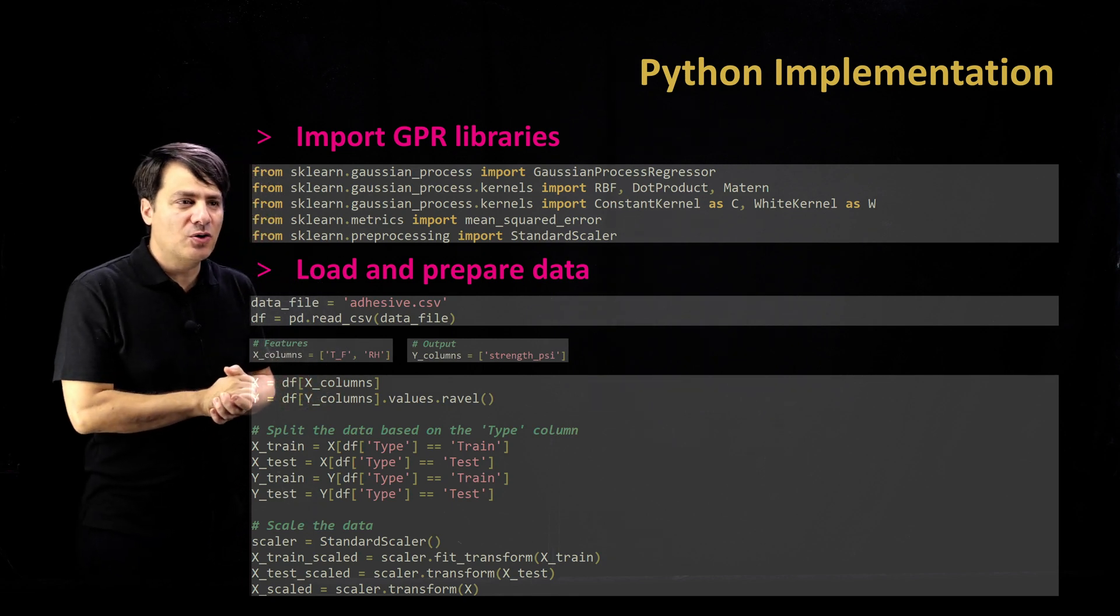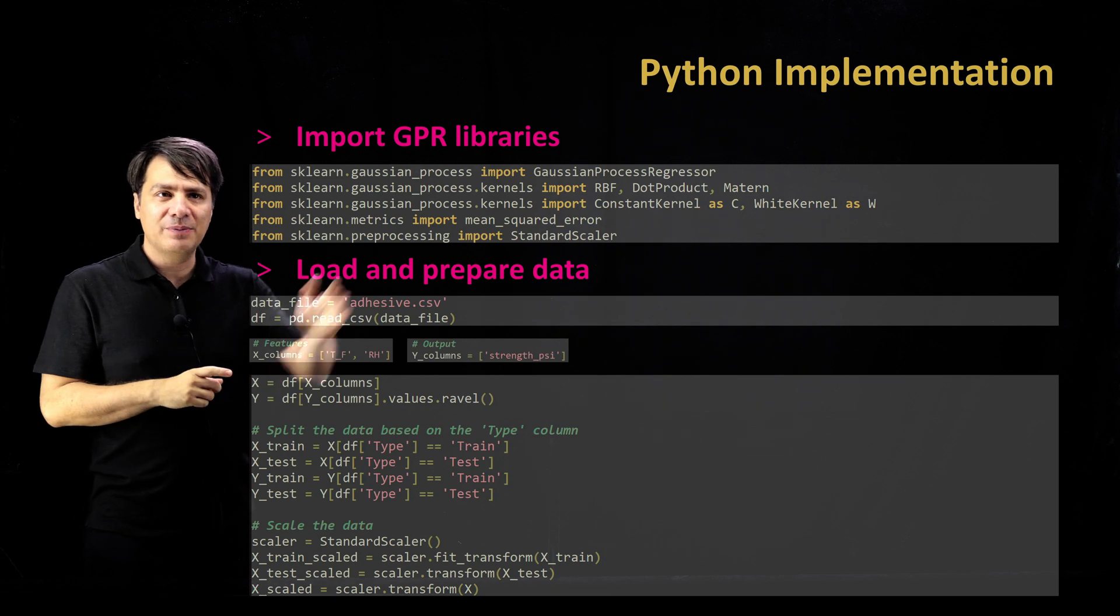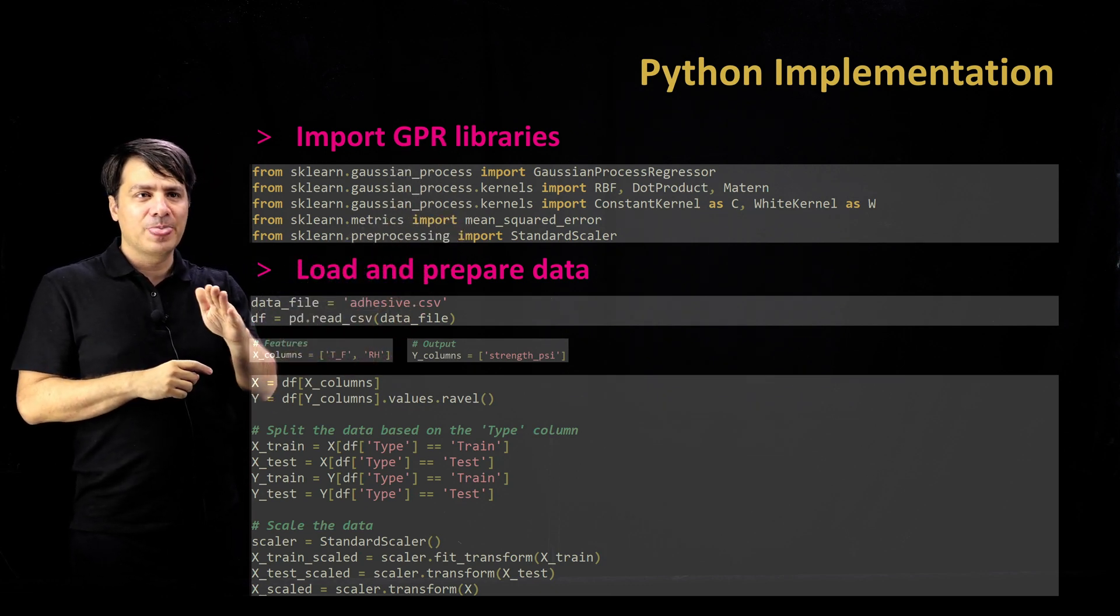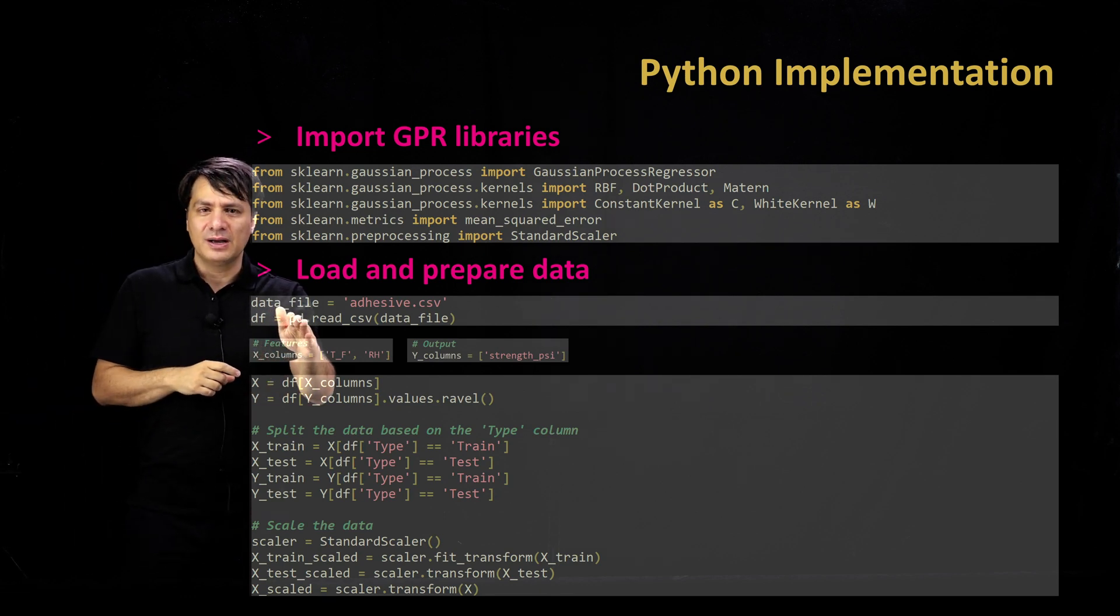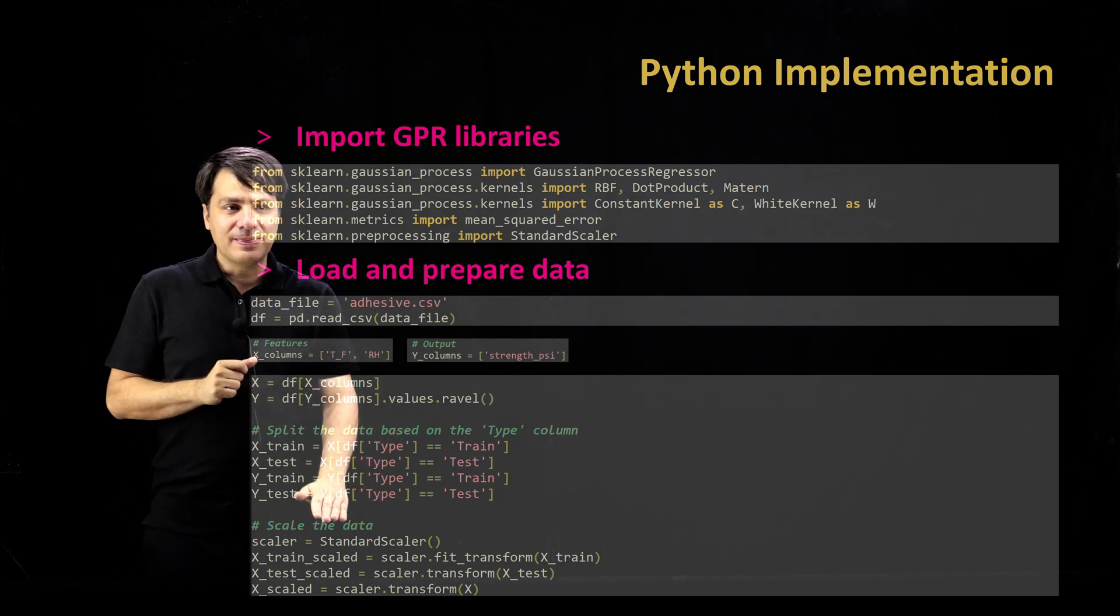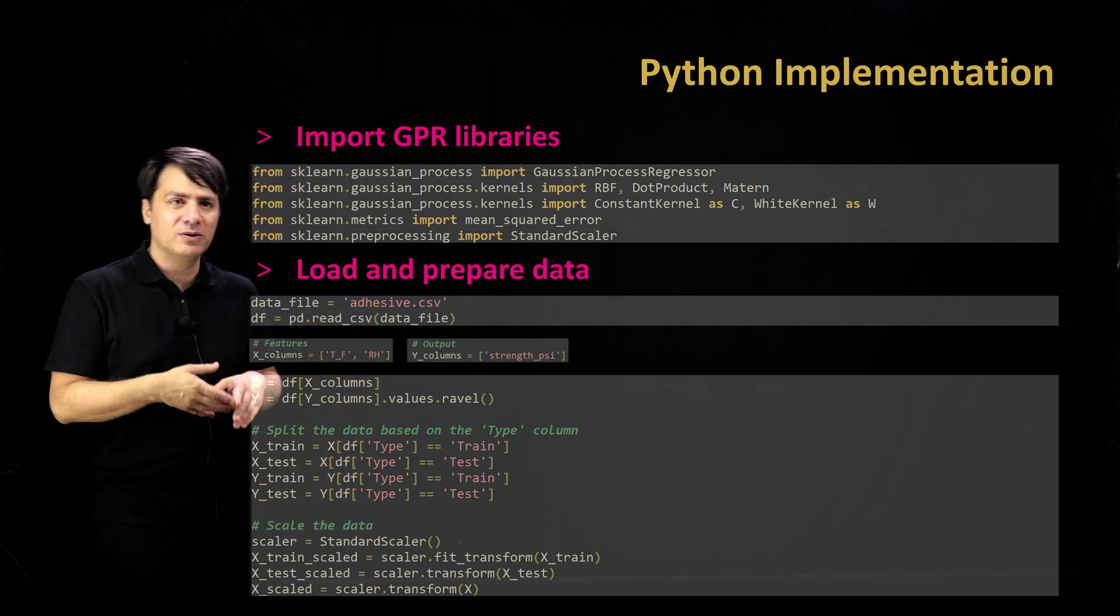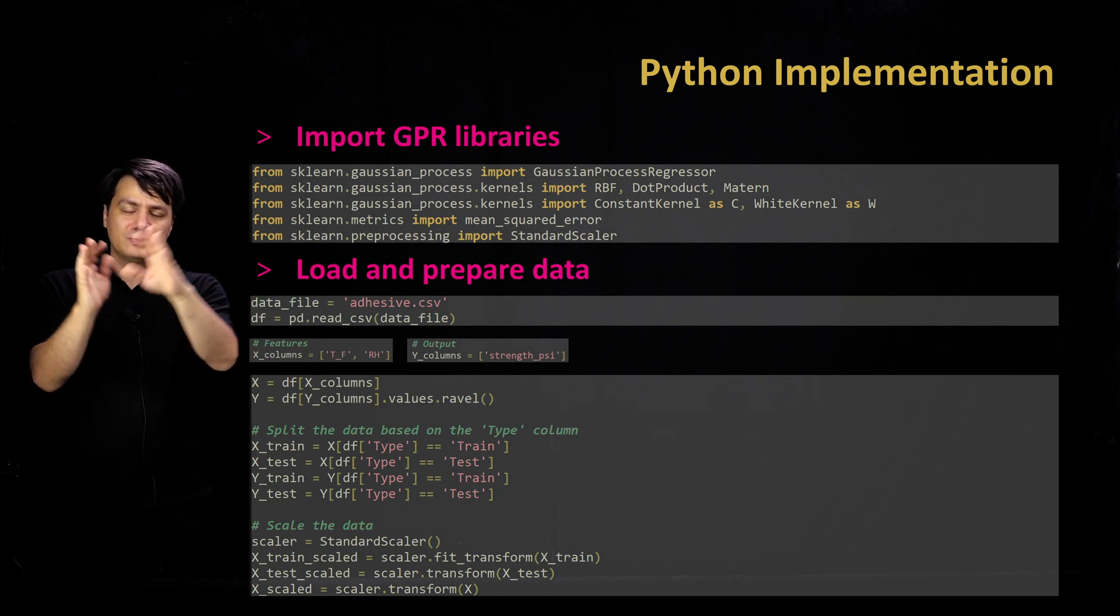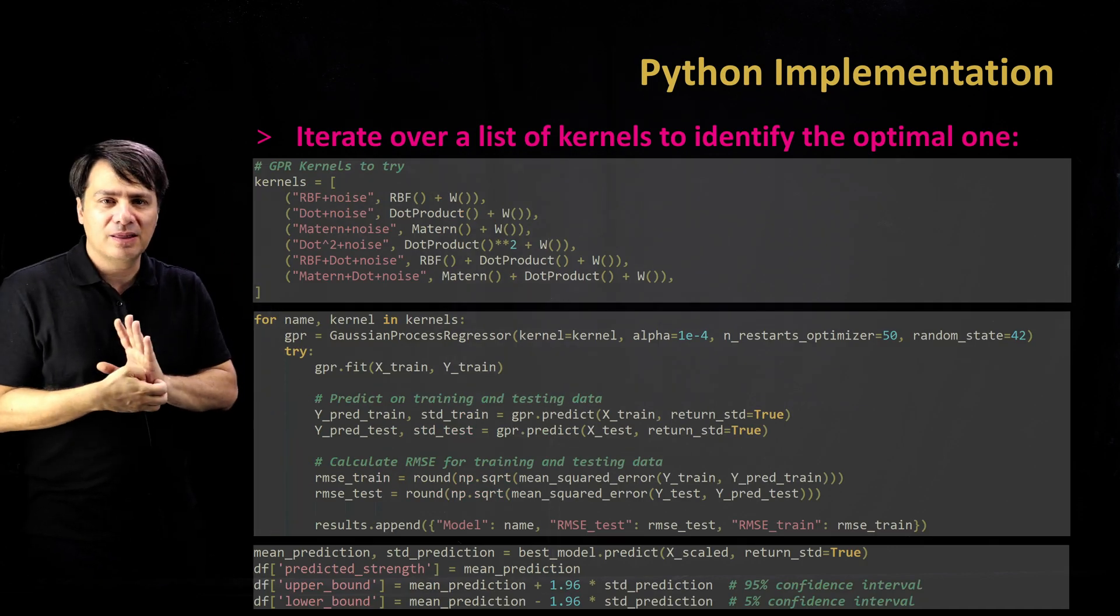So, Gaussian process regression. The code has been provided for you again, and I'm going to explain it slightly. We are using the scikit-learn library to import the Gaussian process regressor. You are importing the CSV file, the adhesive CSV file into Pandas framework. You're creating your X and Y values, creating your test and training datasets, and then you're scaling the data and preparing it for training. These are all standard ways of bringing the data, calling the libraries, and preparing it for training.